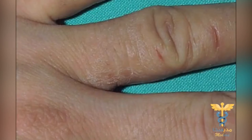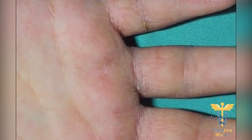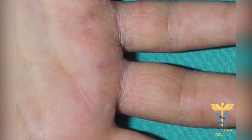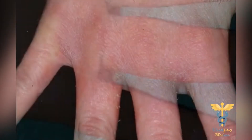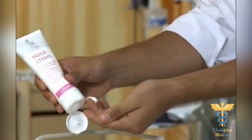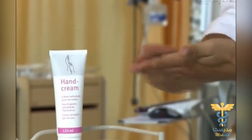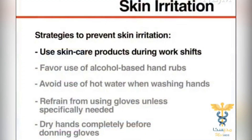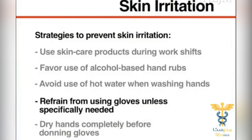There are some common problems associated with hand hygiene. Irritation dermatitis can occur after repeated use of hand hygiene products; common symptoms include dryness, itching, and sometimes cracking and bleeding. In rare cases, allergic dermatitis can occur. Damaged skin is more difficult to disinfect and may be more susceptible to colonization. To prevent skin irritation, use skincare products frequently during work shifts, use alcohol-based hand rubs, avoid hot water when washing hands, refrain from using gloves unless specifically needed, and dry hands completely before donning gloves.